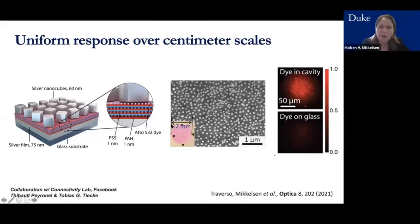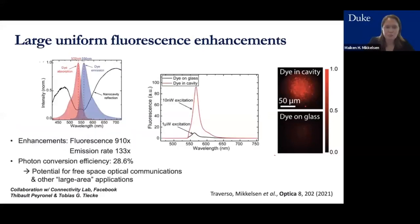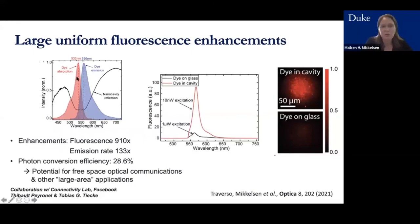At first look, the fluorescence from the dye embedded in the cavity is much brighter than dye on glass — demonstrating large, uniform fluorescence enhancement. Critical to this is choosing the plasmon resonance wisely: we picked a dye with a small Stokes shift so the plasmon resonance could enhance both the absorption/excitation rate and the emission simultaneously.